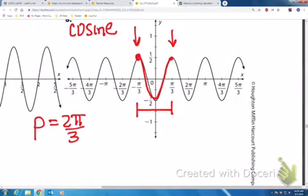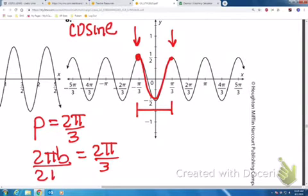So I want to solve this for b. We know the period formula is 2 pi over b equals the period 2 pi over 3. We would divide by 2 pi, cancel out the 2 pi's, and we're going to get b equals 1 third.